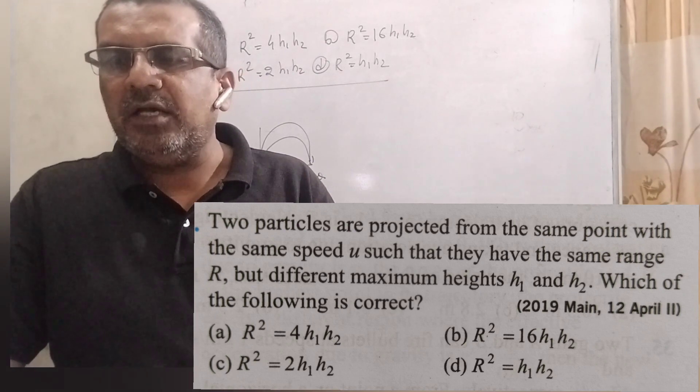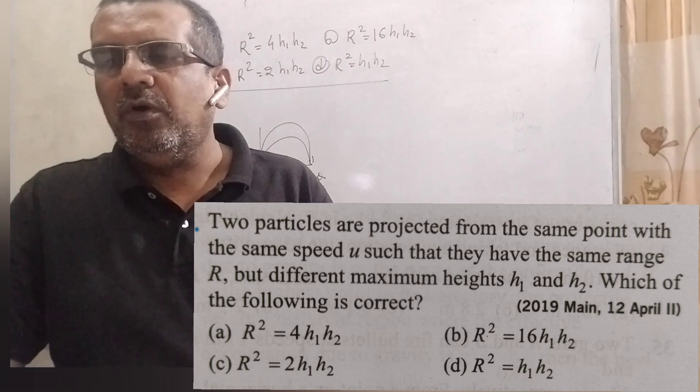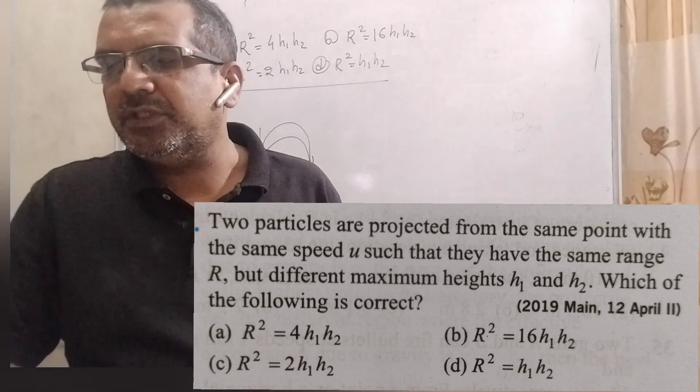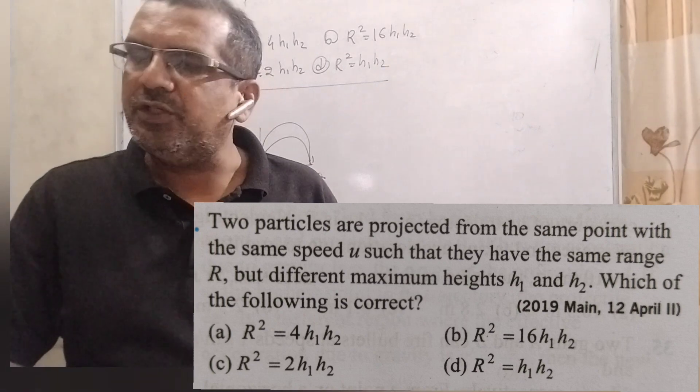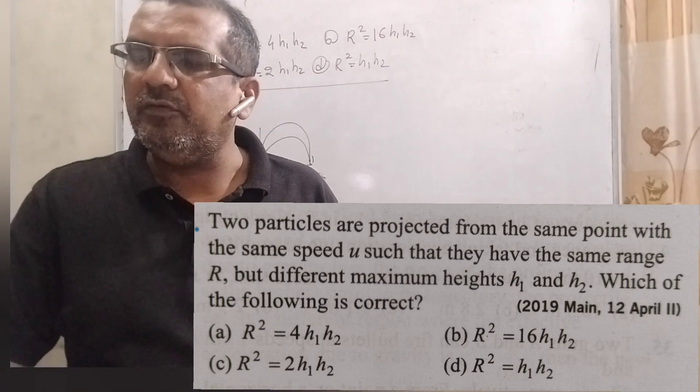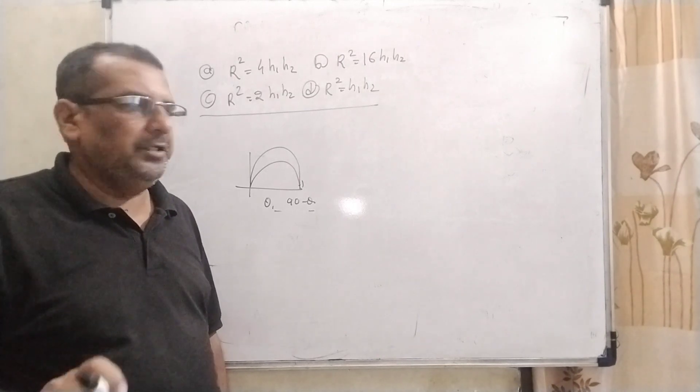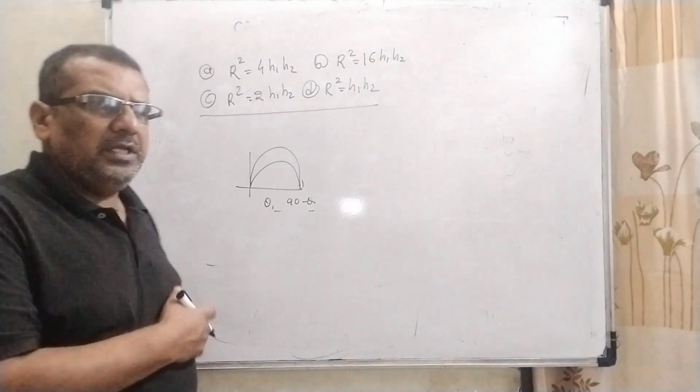Here option a is r square equal to 4 h1 h2. Option b r square equal to 16 h1 h2. Option c r square equal to 2 h1 h2. Option d r square equal to h1 h2. This question is asked JEE 2019.